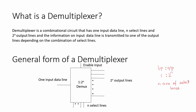So that is what is meant by the information on the input data line being transmitted to one of the output lines depending on the combination of select lines. In the next video, we will see a 1-to-4 demultiplexer. Thank you.